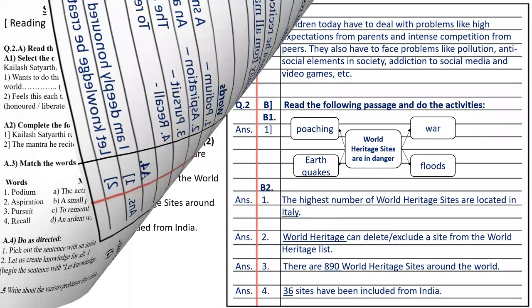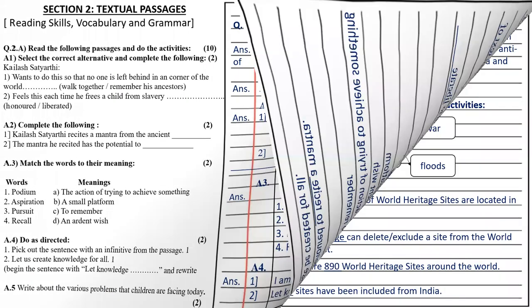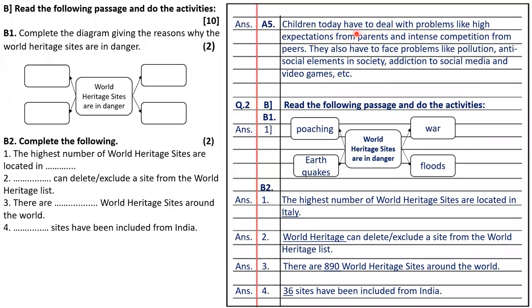Question five is write about various problems that children are facing. Children today have to deal with problems like high expectations from parents and intense competition from peers. They also face problems like pollution, anti-social elements in society, addiction to social media and video games, etc. You can write your own answer.